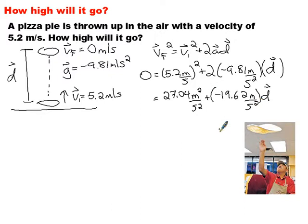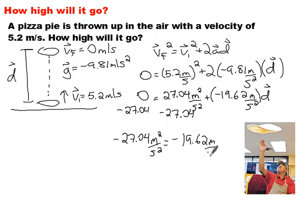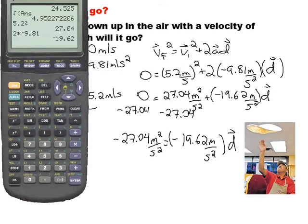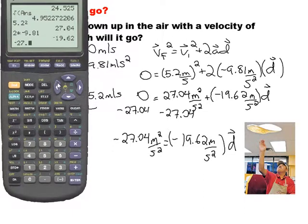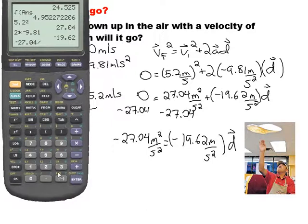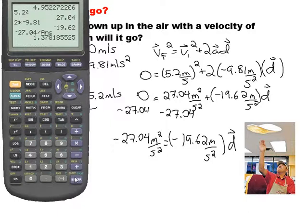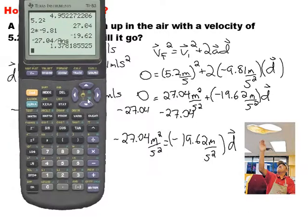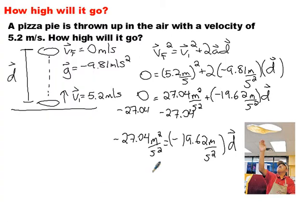So what do I got to do here to get that D by itself? I still got a zero on the left. Well, I'm going to subtract 27.04 from both sides, negative 27.04 meters squared per second squared, equals negative 19.62 meters per second squared, times D. And now we'll just divide to get rid of the negative 19.62. Put in negative 27.04, there we go, divide it by negative 19.62. And so this is going to go, how many sig digs we got? Two sig digs, 1.4 meters in the air. Classic question, how high does it go?